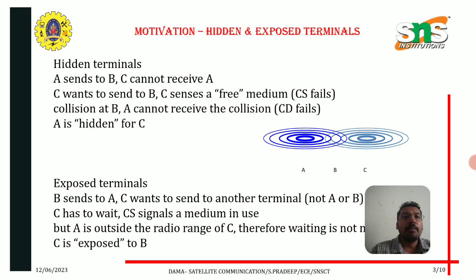In exposed terminals, suppose B sends to A. C wants to send to another terminal. C has to wait because carrier sense signals the medium is in use. But A is outside the radio range of C, therefore waiting is not needed. C is exposed to B.